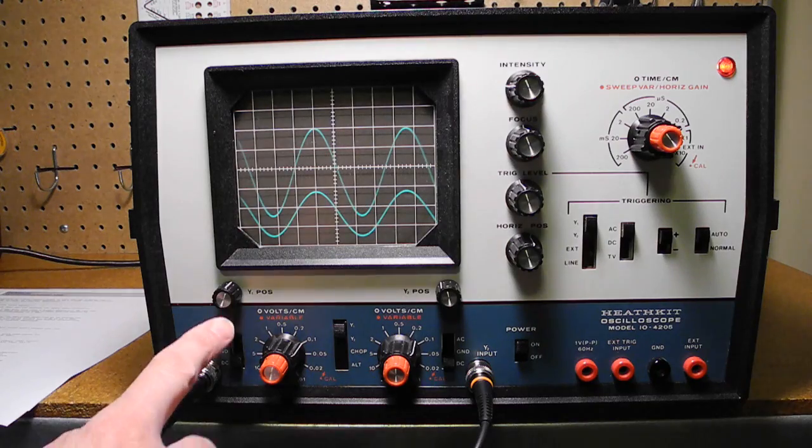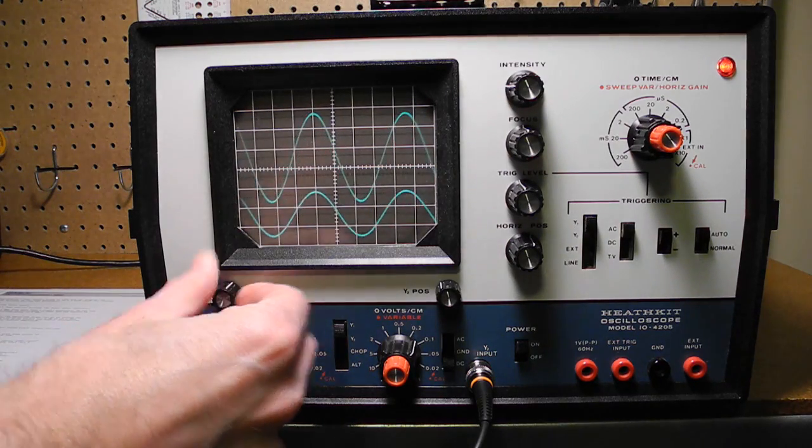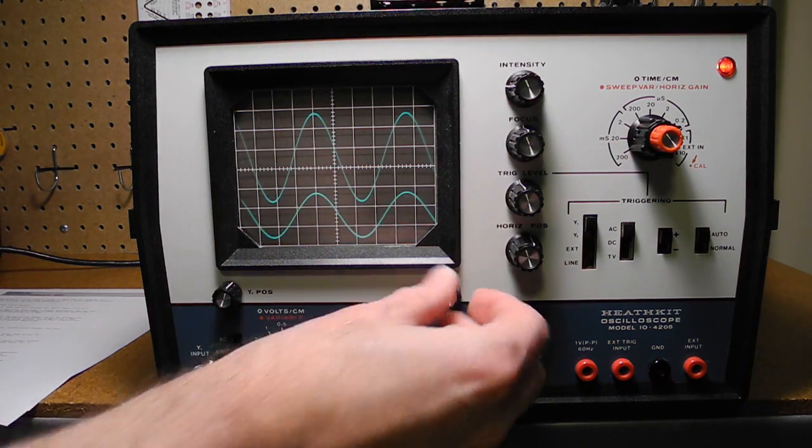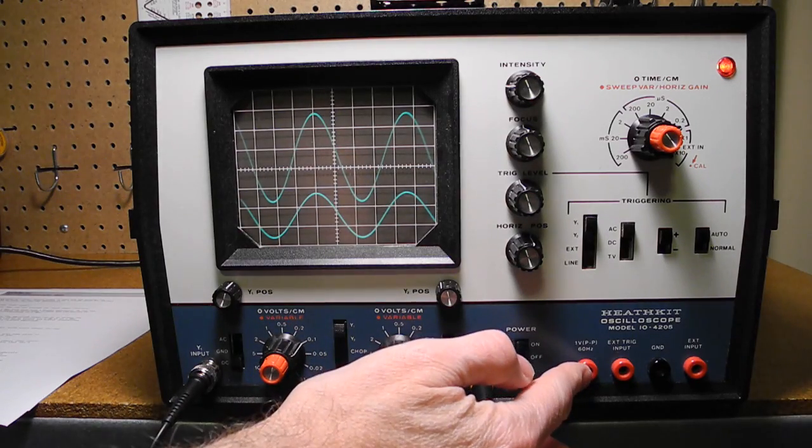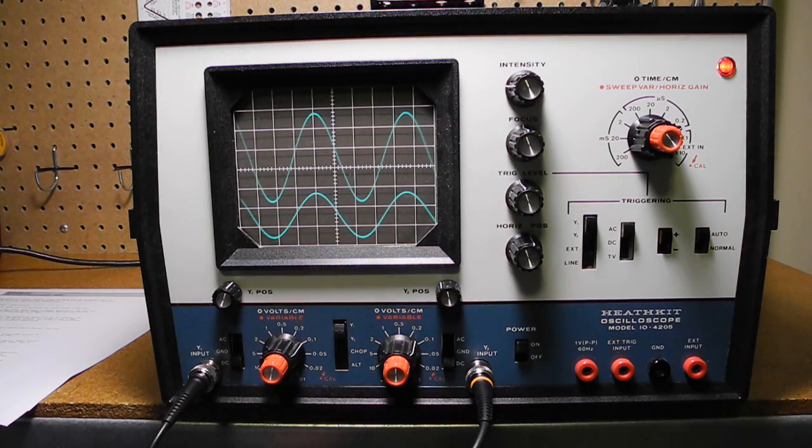Down here we have Y position for each of the traces. And here we have a 1 volt, 60 hertz test signal, external trigger input, ground, and an external input.